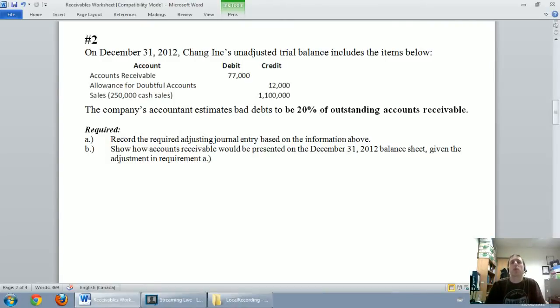In our last video, we talked about the income statement method for setting up an allowance for doubtful accounts and a bad debt expense for the year. In this video, we're going to do the exact same problem, but we're going to do the balance sheet method. So rather than taking a percentage of sales, we look at taking a percentage of receivables.